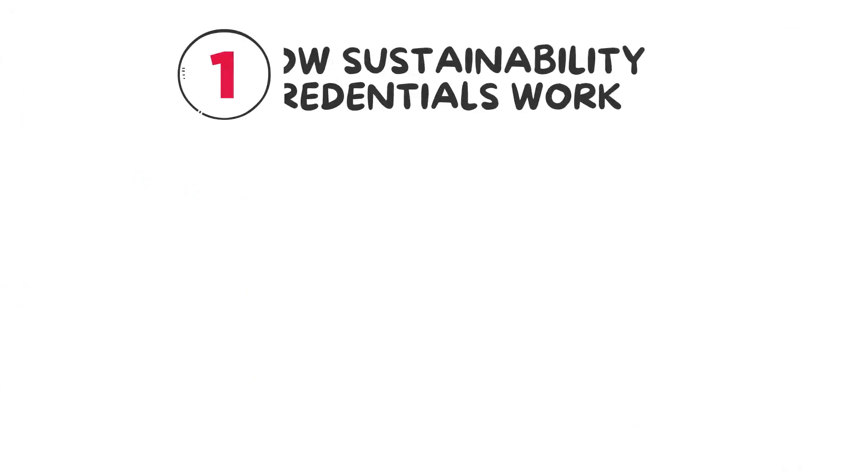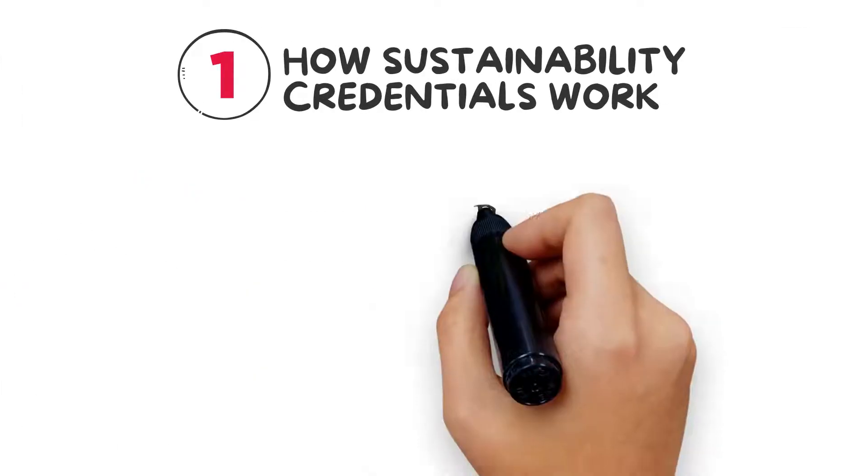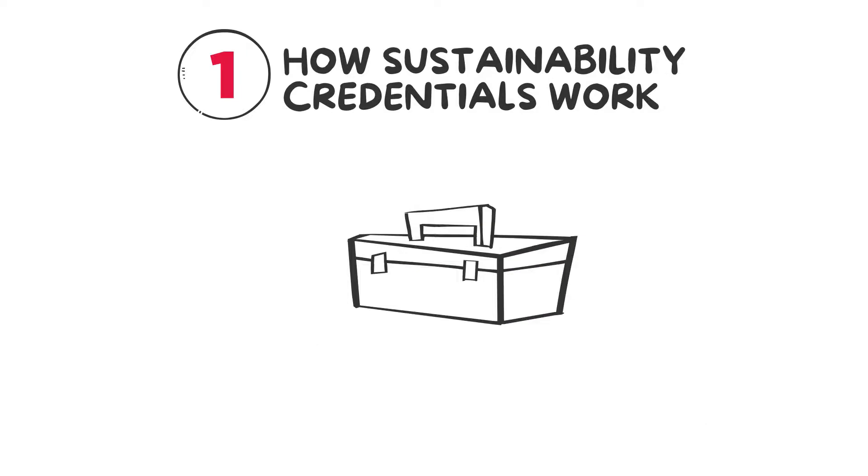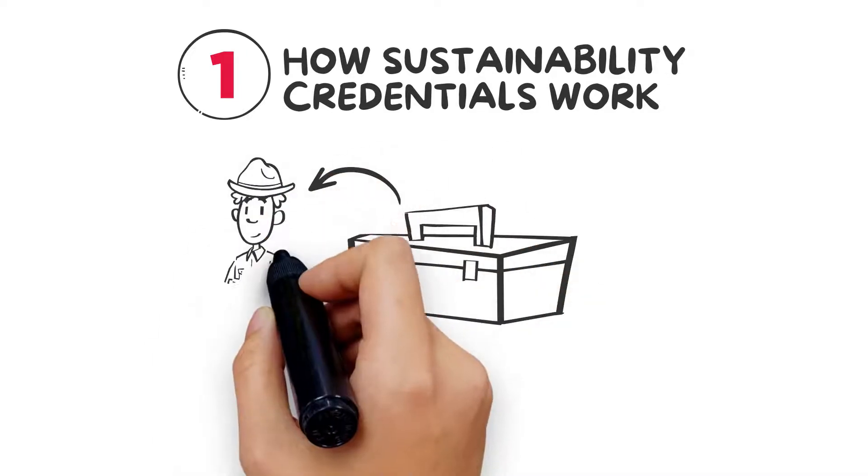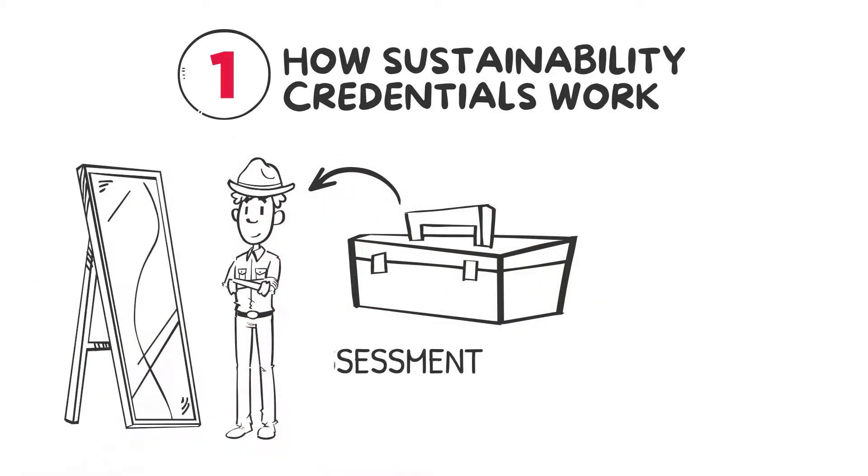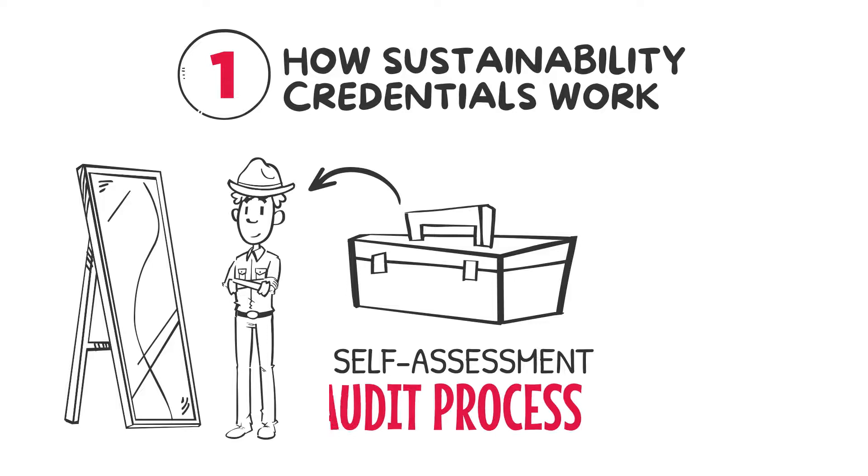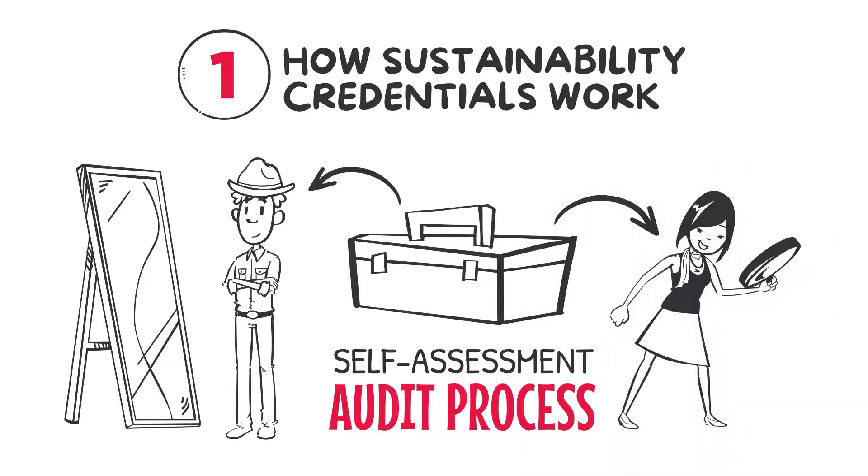So how do sustainability credentials work? To become accredited as a sustainable producer, Old MacDonald's farming practices will need to be recorded and assessed, either by self-assessment, comparing his farming practices with best practice standards, or through an audit process performed by a third party.